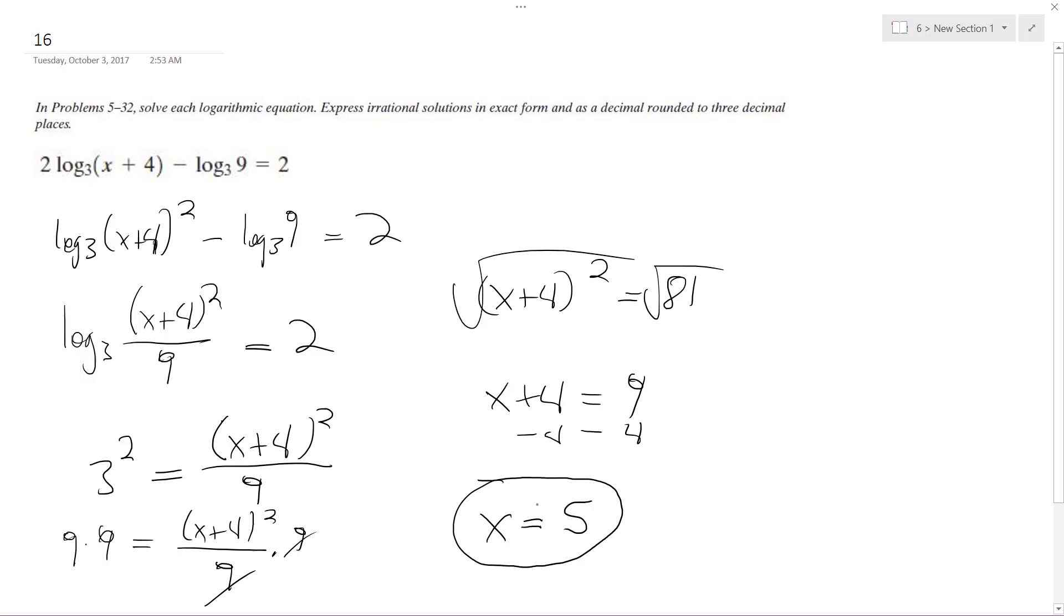And that works out. If you check, log base 3 of 5 plus 4 squared minus log base 3 of 9 equals 2. It's the same thing as just log base 3 of 9 squared divided by 9 basically equals 2.